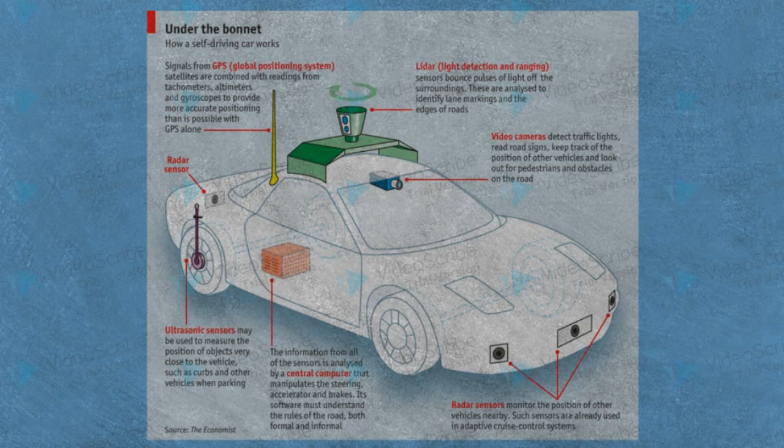Let's look at how our self-driving car works. Different types of sensors need to be used in a self-driving car. For example, GPS — Global Positioning System — which transmits signals to the satellites for the accurate position of the car. Also, gyroscopes and altimeters can be used.